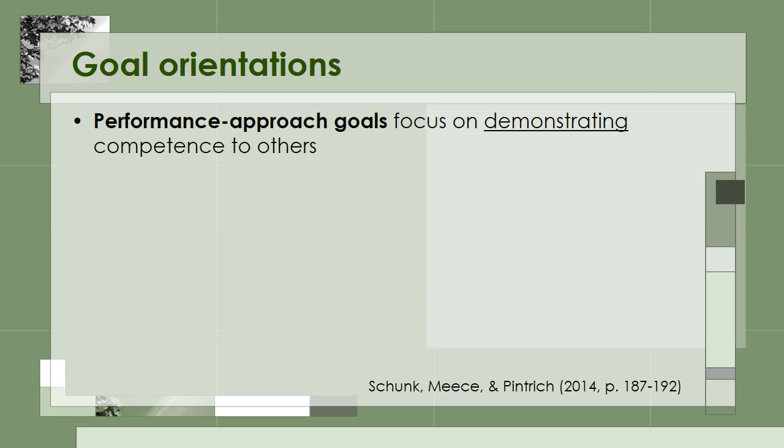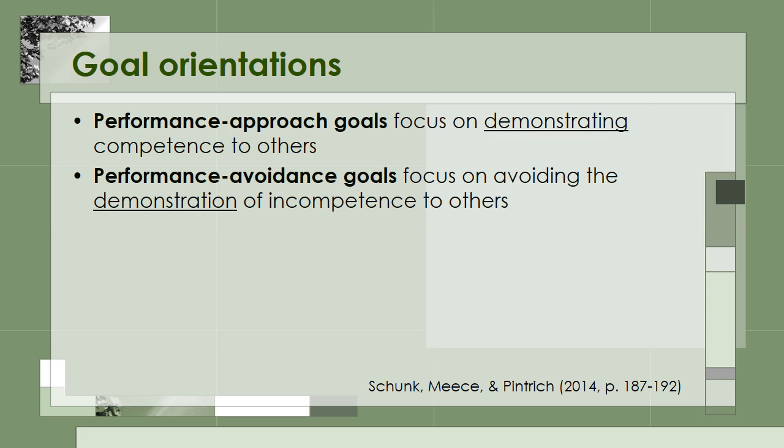Performance approach goals focus on demonstrating competence to others. Performance avoidance goals focus on avoiding the demonstration of incompetence to others. You can see that both of these performance goals focus on demonstrating competence, but in the first case the student is approaching the goal by wanting to show others how good they are. In the second case, the student does not want to appear incompetent.